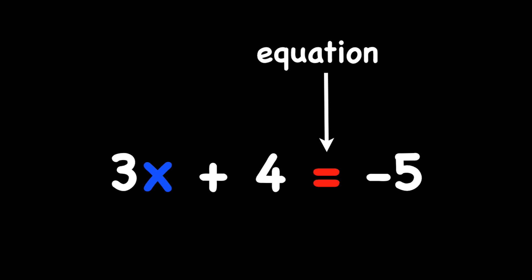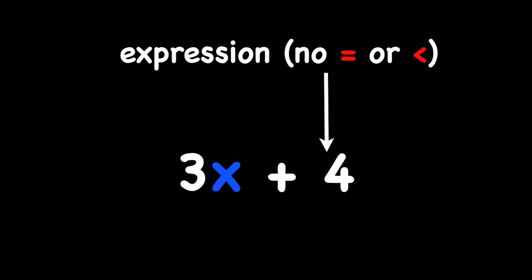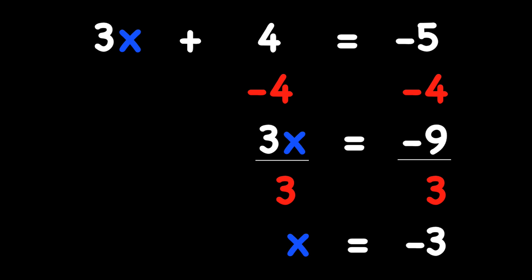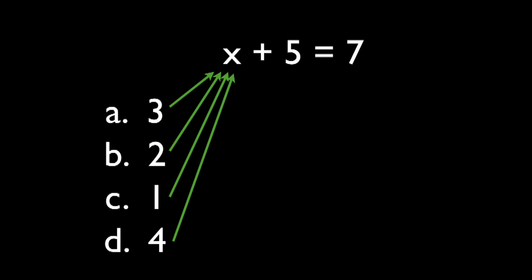This is a really good strategy that's really awesome because it works every time. Most problems will give you a task of finding the value of the variable, either through an equation, an inequality, or an expression. You can do the traditional method of inverse operation, or you can try what we're calling working backwards. Let's see what this will look like.